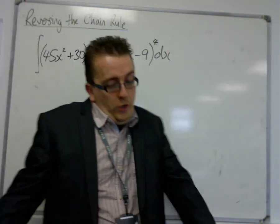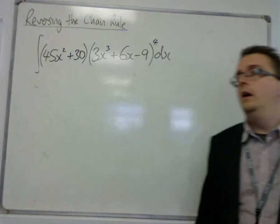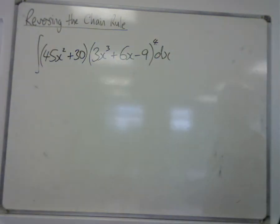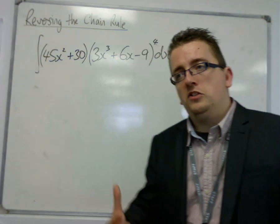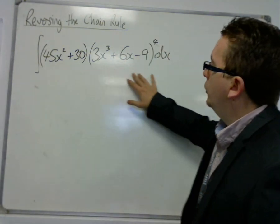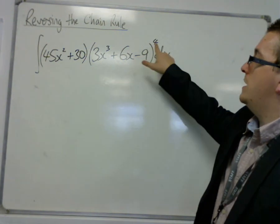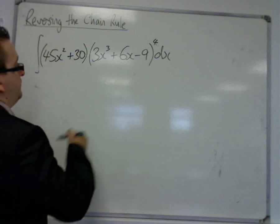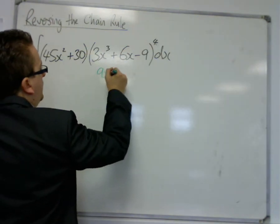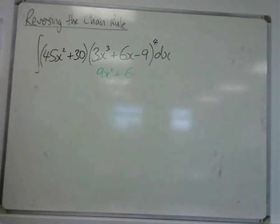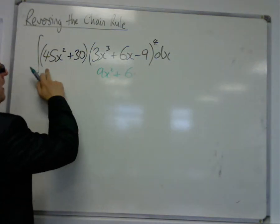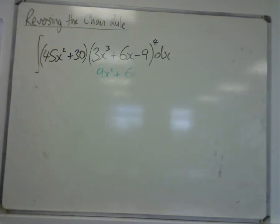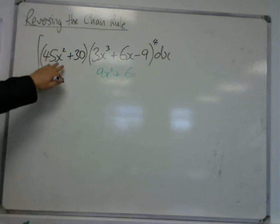The question is really: how do you spot these? How do you spot that you can do chain rule backwards quite easily? The way to do it is to look at what is the complicated bit — what is inside the bracket raised to a power — and then differentiate it. You might find the derivative is something like 9x² + 6 from what's inside there, and then you say to yourself that's just 5 lots of that. So it's very close to what you had originally.